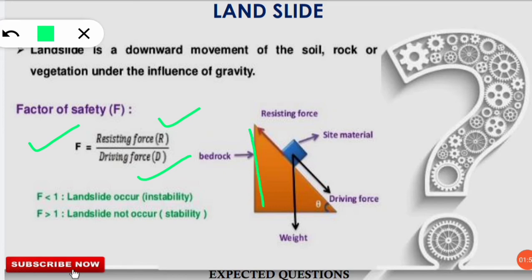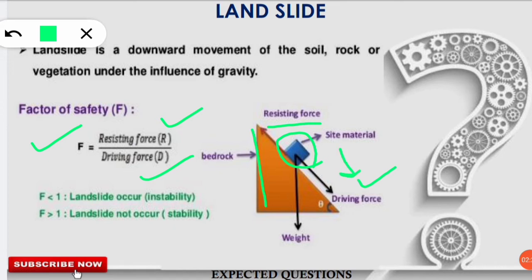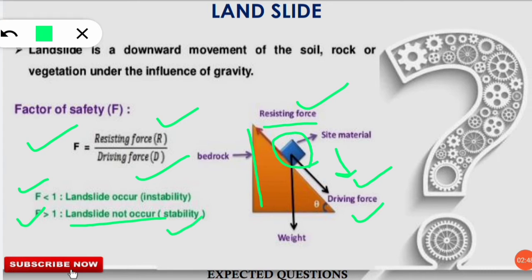Assume that the bedrock is the parent rock and the overlying material — which can be soil, rock, or vegetation — is acted upon by the resisting force, which resists movement on the slope. One more force also acts: the driving force, which moves the body from the upper part to the lower part. When the driving force is greater than the resisting force, a landslide occurs — that is instability. When the F ratio is less than 1, it is unstable and a landslide will occur. If the F ratio is greater than 1, the region is stable and no landslide will occur.